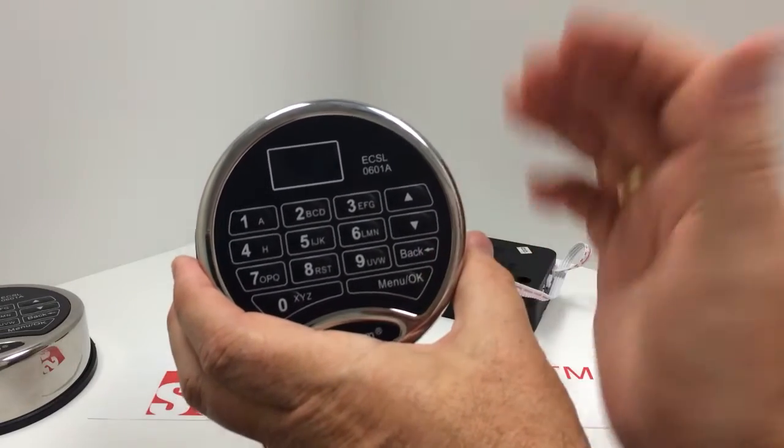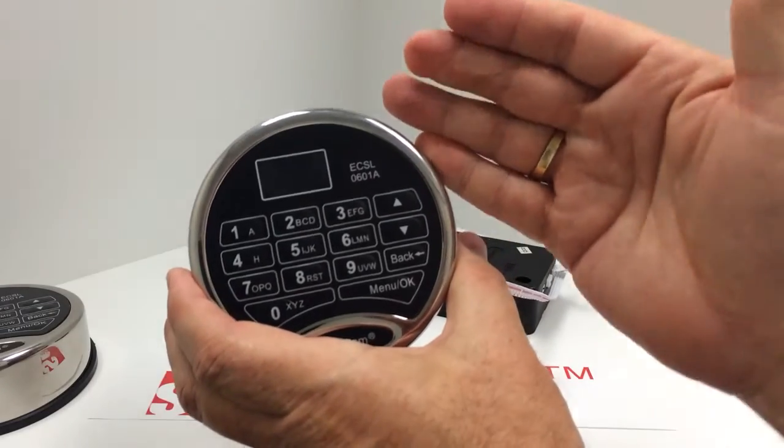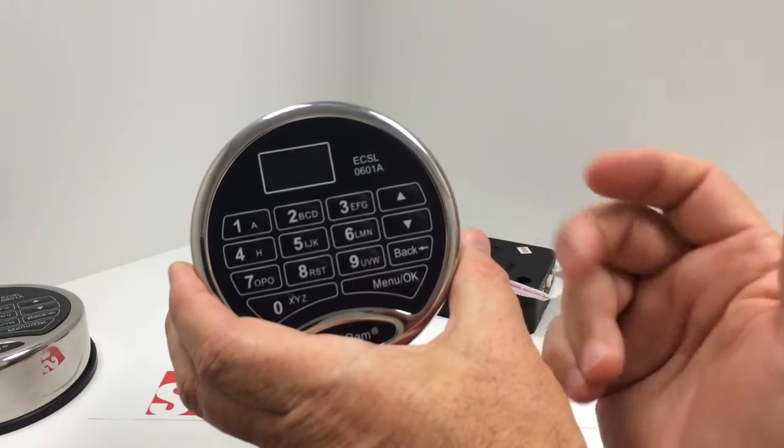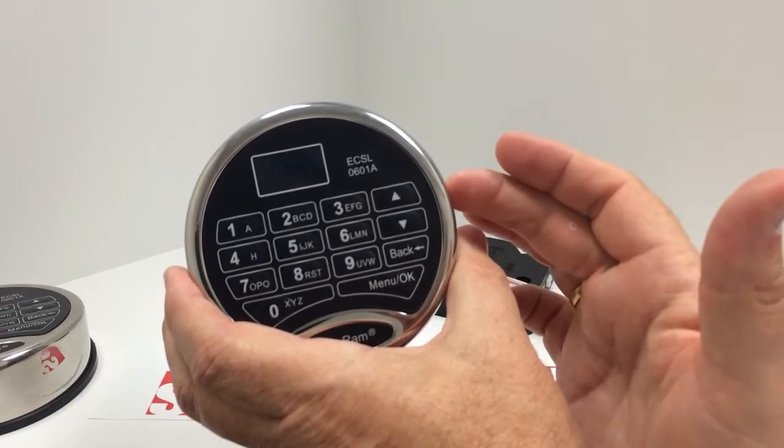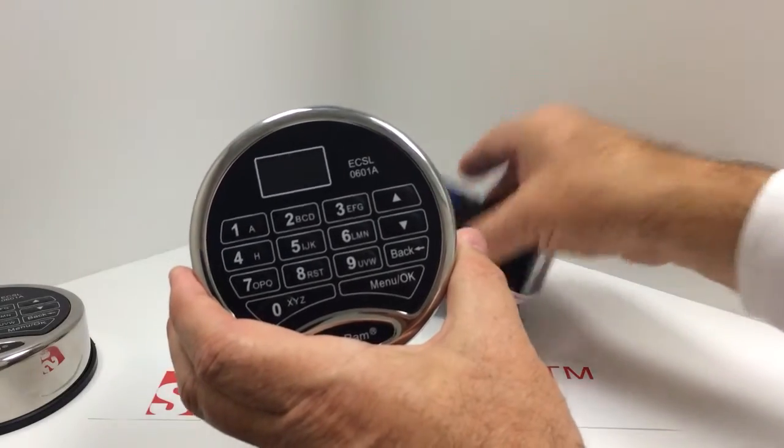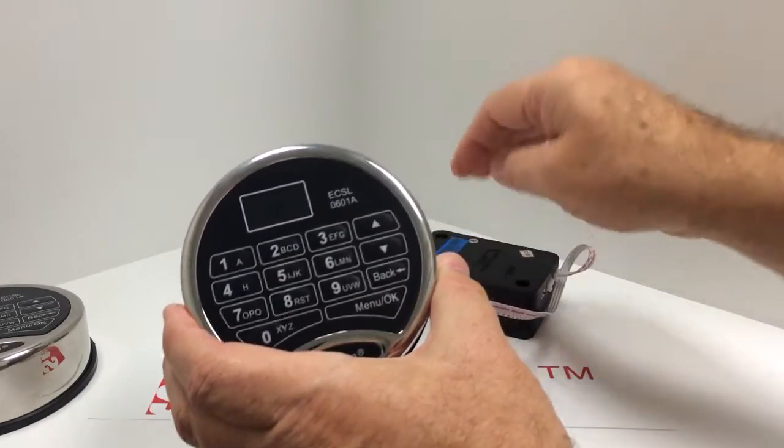It says invalid code because the entry pad has code program information default. It's inside the memory in the entry pad. This information is also inside the memory of the lock body.